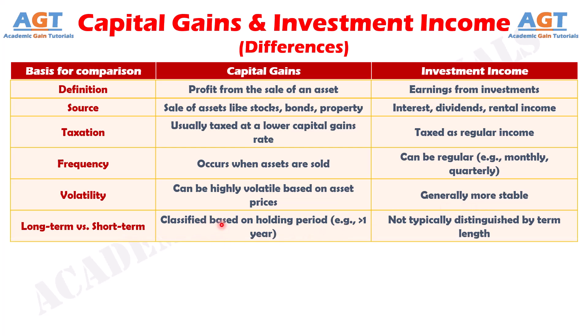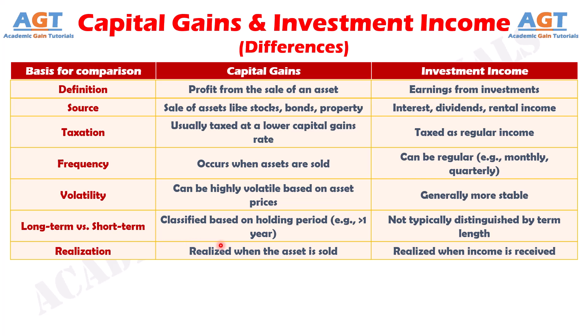Number six: capital gains are classified based on the holding period of the asset, such as long-term or short-term, whereas investment income is not typically distinguished by term length. And finally, difference number seven: capital gains are realized when the asset is sold, whereas investment income is realized when the income is received.